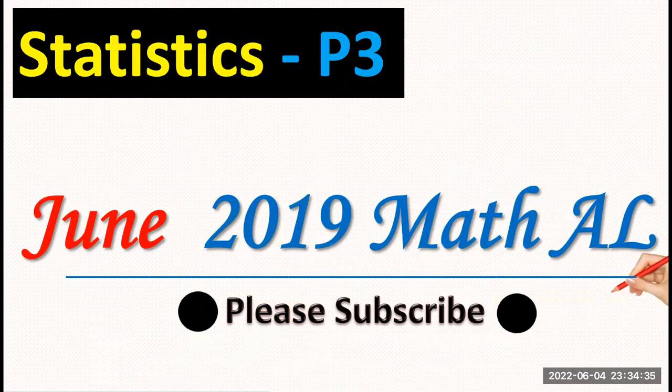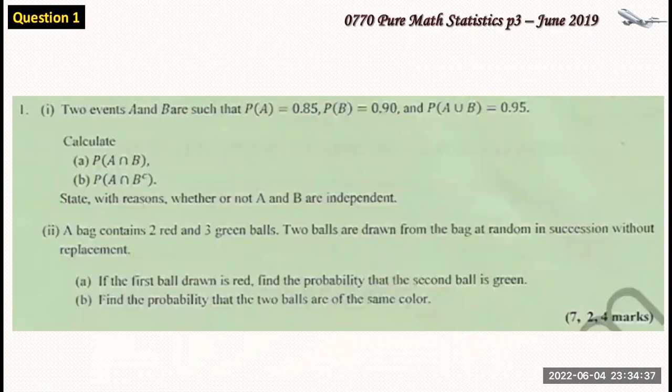To join us for online preparation, equally go there and you will have so much. Don't forget to subscribe. Question 1 reads, two events A and B are such that probability of A equals 0.85 and probability of B equals 0.90, probability of A union B equals 0.95.